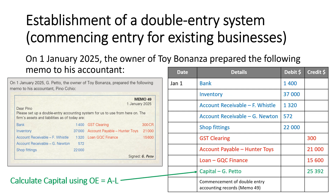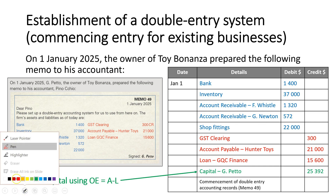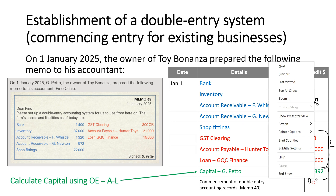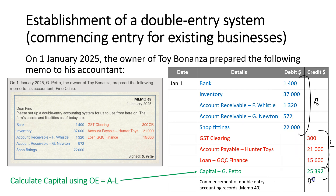This is what it looks like when fully recorded. You can see all our assets — I've put them in blue to match the source document for ease of use — and they all have a debit balance. These are all our liabilities, and this one here is our owner's equity, calculated using the formula on the left.